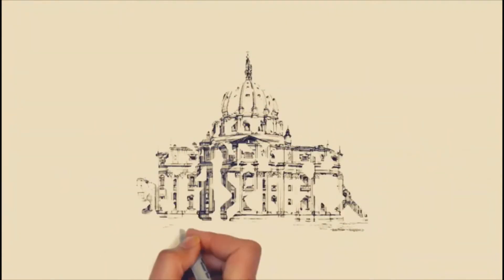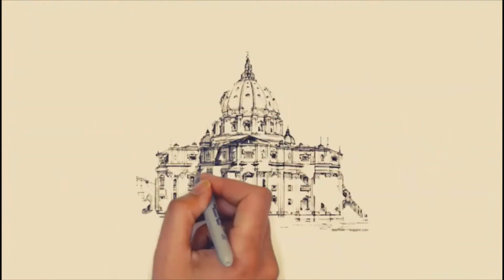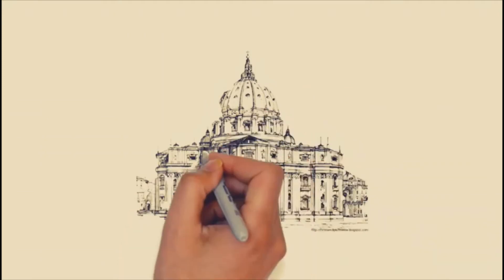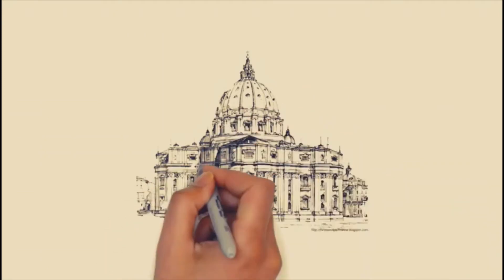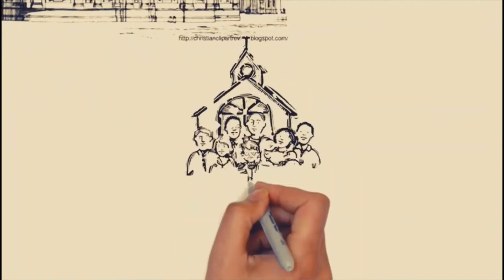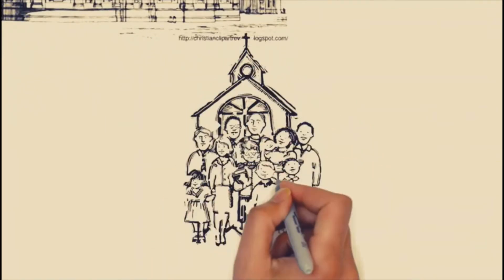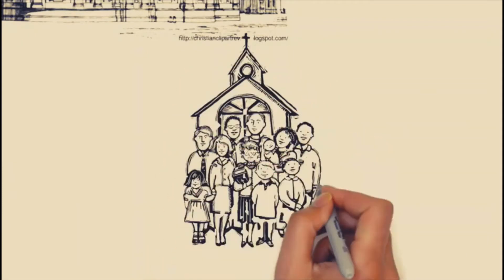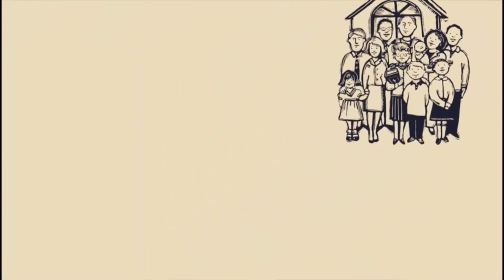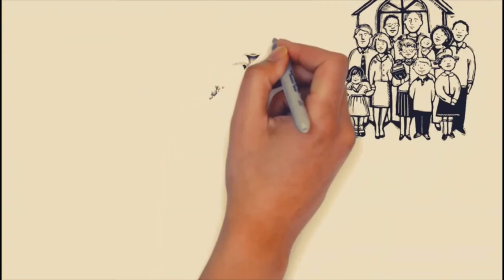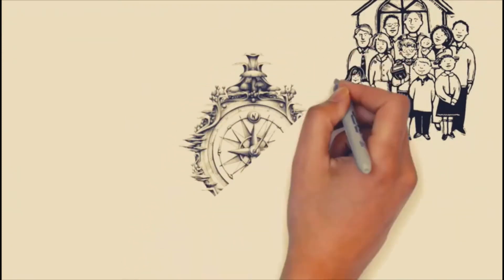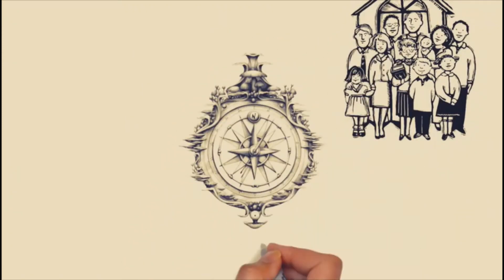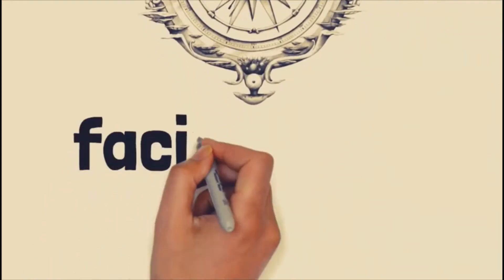The church as a building is considered a temple of God. This is where the faithful gather together to worship and experience God. It also represents the universal Catholic Church into which all men are called to be in communion with. According to our Eastern tradition, the church is built in the east-west direction so that the faithful can pray facing the east.